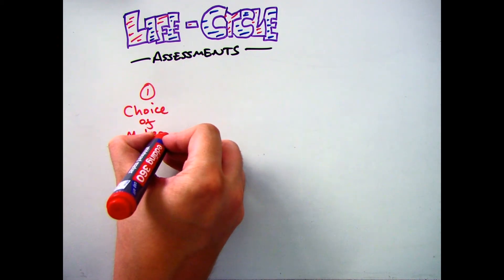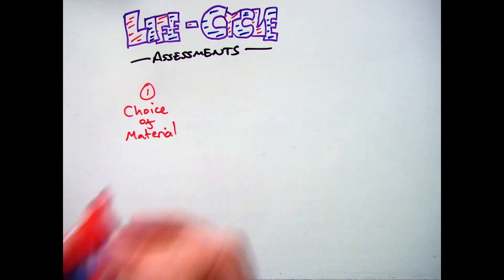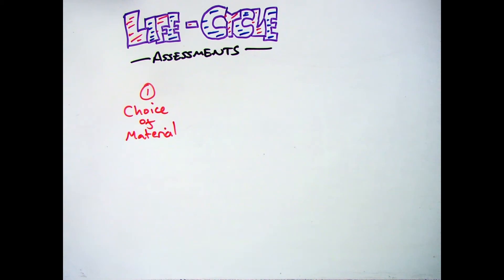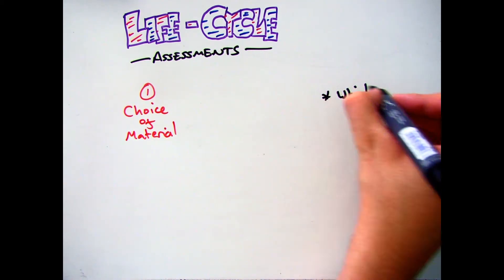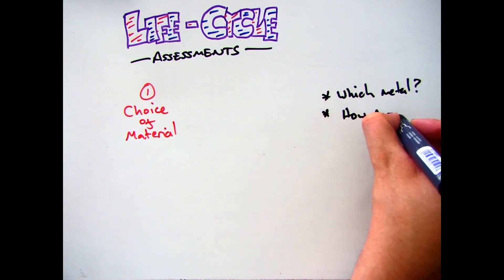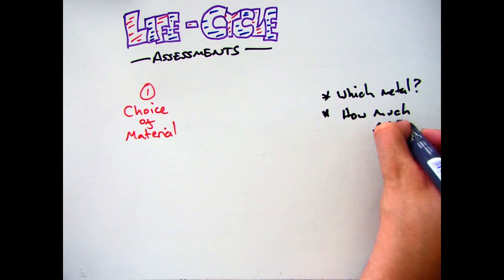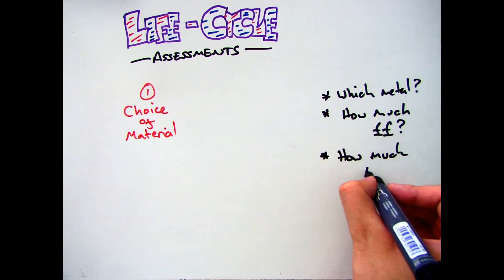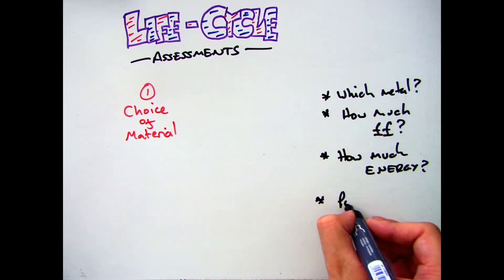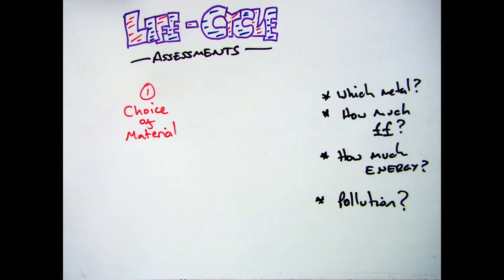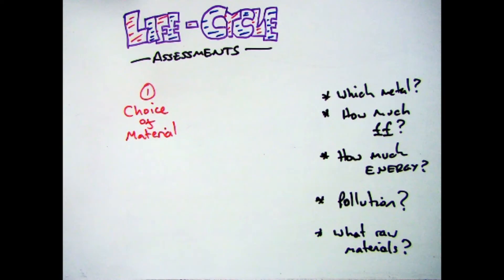There are four stages to a lifecycle assessment, the first one being your choice of material. When you decide to make a new product there are a few things you need to think about: what metal or material is it, how much is it going to cost to get it out of the ground, how much energy is it going to take, is it going to produce any pollution when removing it from the ground, and what raw materials are you going to need — water, different metals, chemicals, and so on.